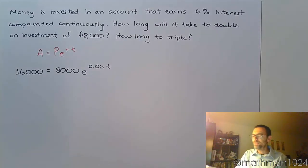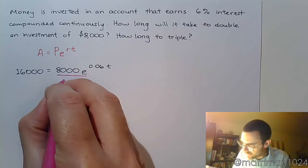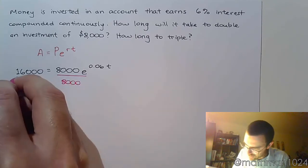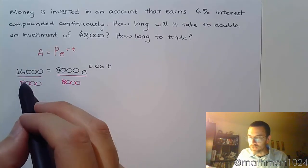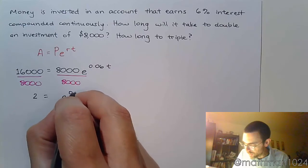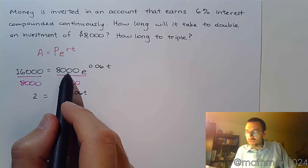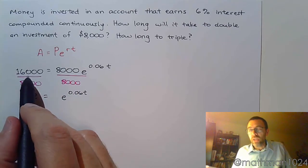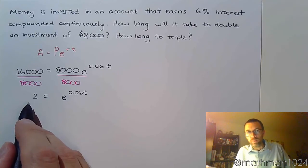Just like we saw in the last problem, before we can apply logs on both sides we need to get rid of this coefficient. So let's divide both sides by eight thousand. Sixteen thousand divided by eight thousand is just two, giving us 2 equals e to the 0.06t. This goes back to what I was saying — whether you invest eight thousand or eight million, the ratio of final to initial is always two.